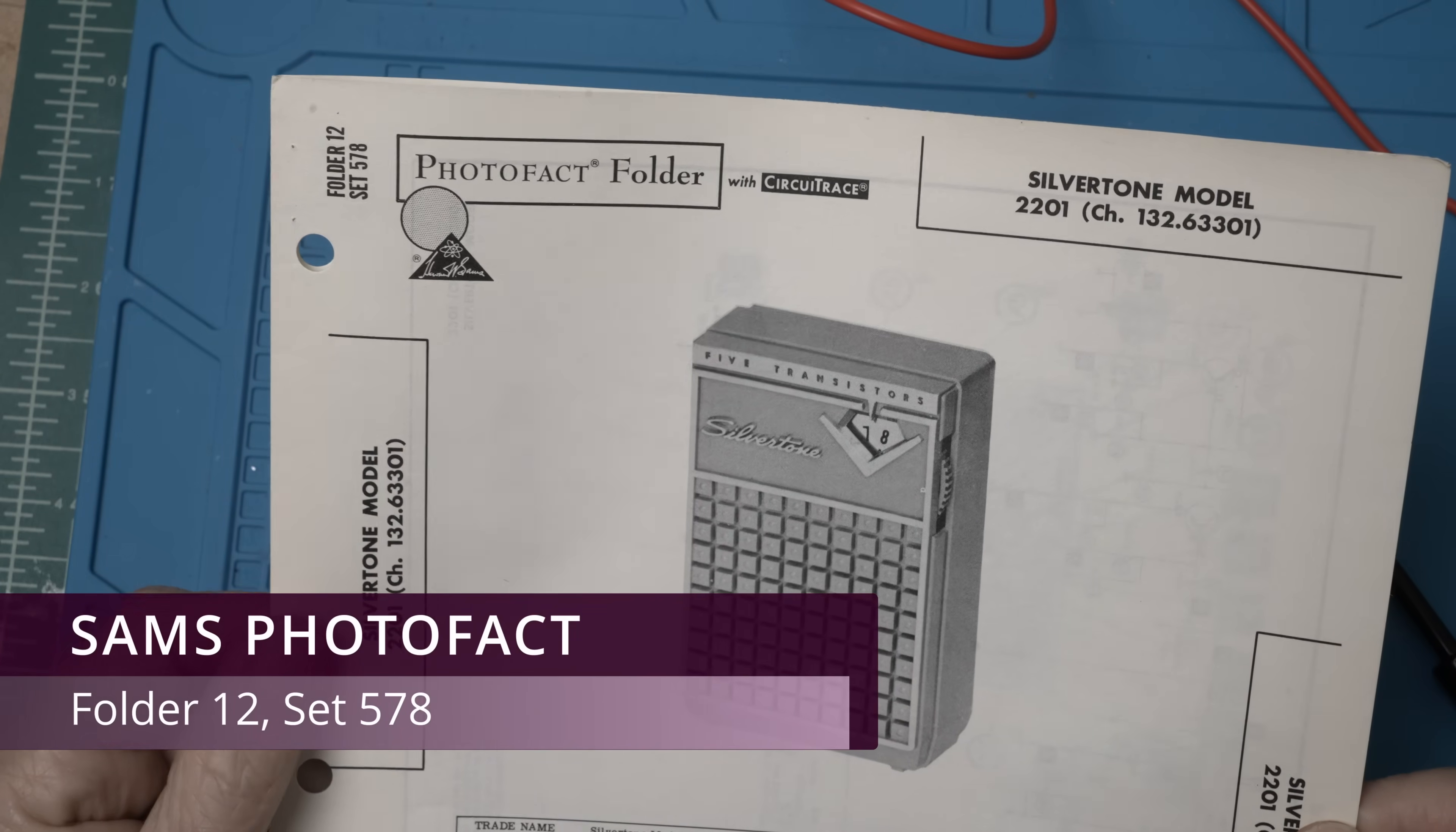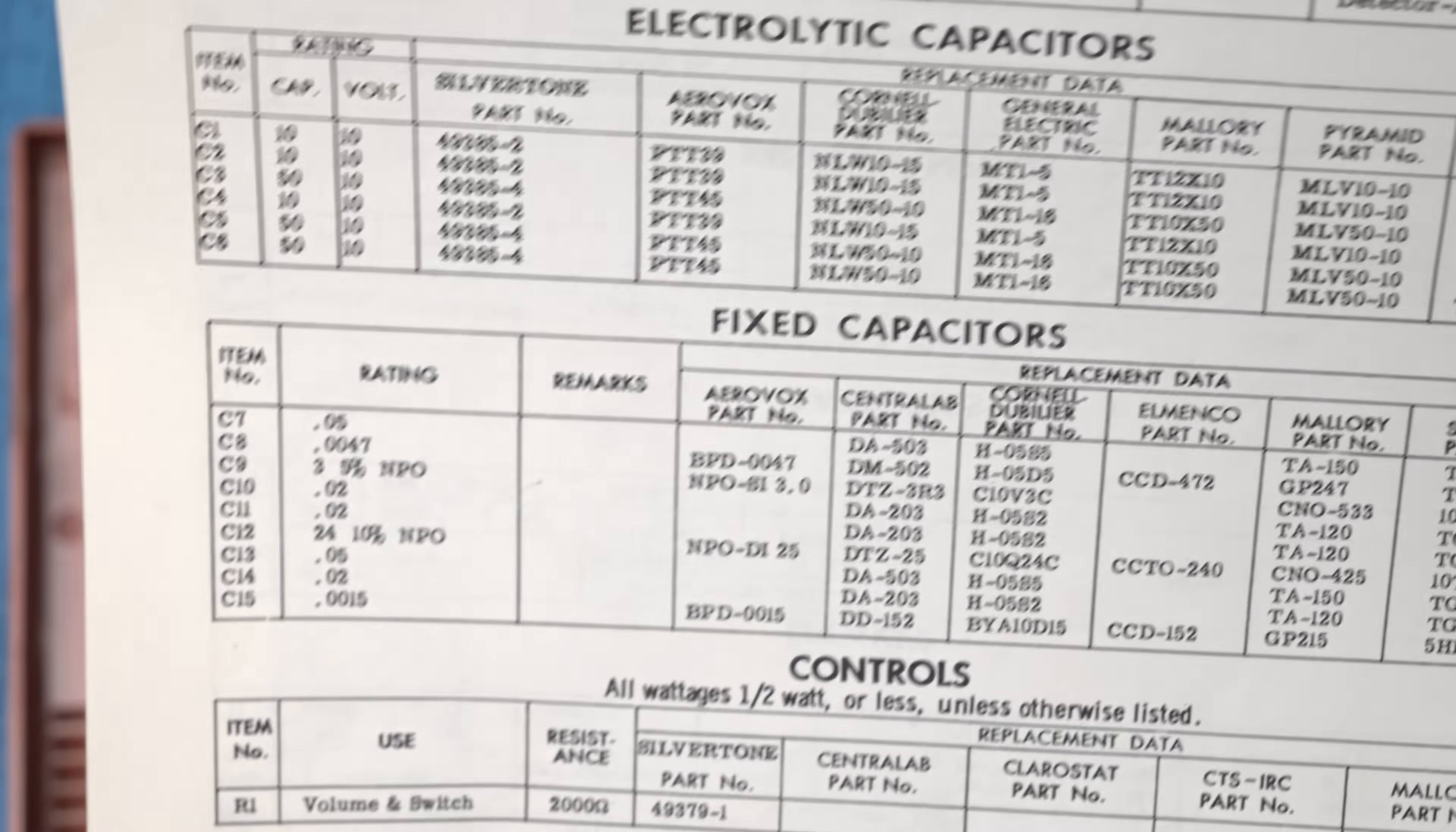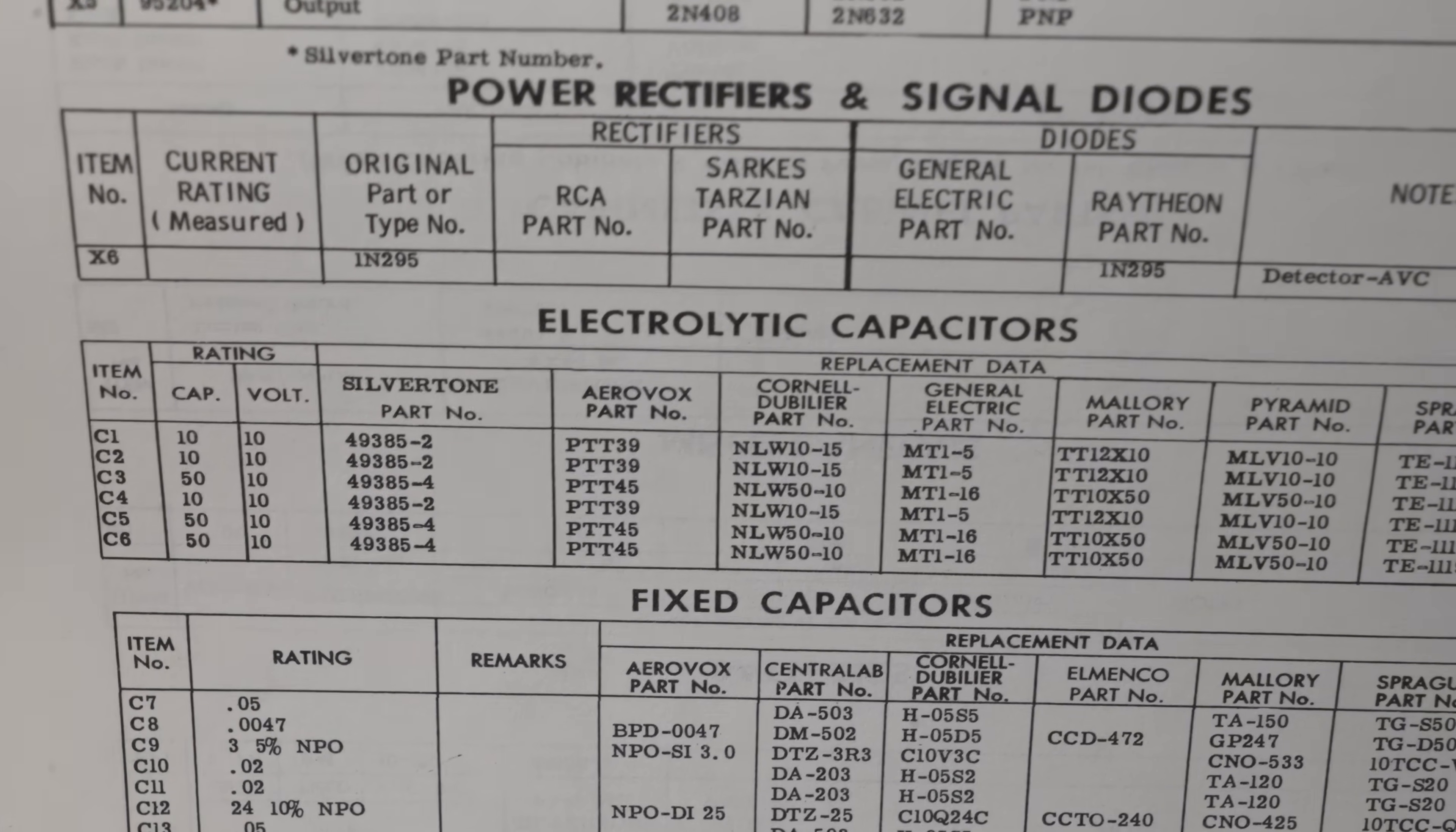I managed to locate Sam's Photofact folder Silvertone 2201. It has pretty much all the information we need here, including information on the electrolytic caps where there are apparently six of them. Well, that's going to be some work. Alright, let's take it apart and get started.